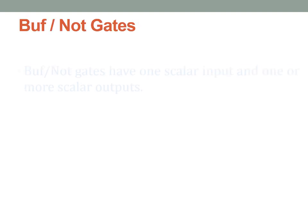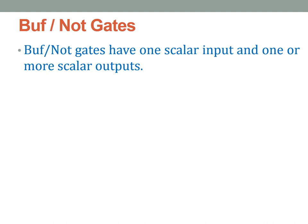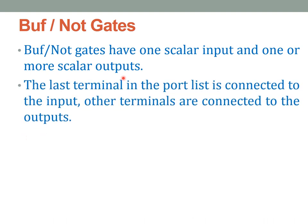The buffer and not gates in Verilog can have one scalar input, but they can have multiple outputs — one or more outputs. This is in contradiction to the AND/OR gates, which can have one output but multiple inputs. The buffer and not gates can have one scalar input and one or more scalar outputs. So in the gate instantiation, the last terminal will be the input; all other terminals will be the output.